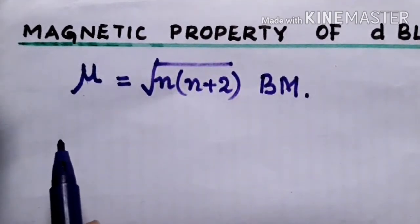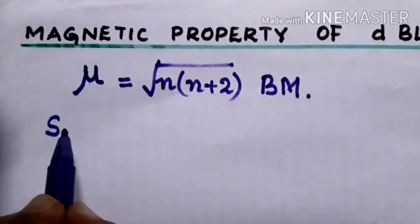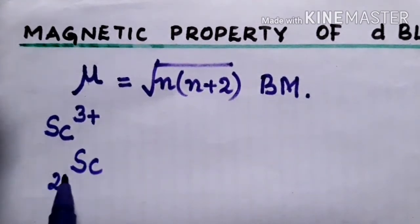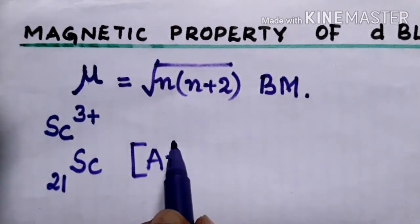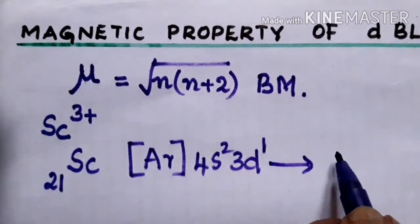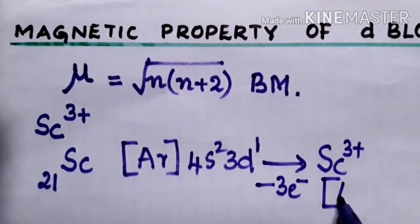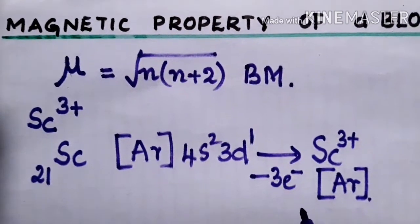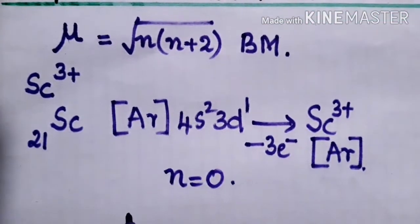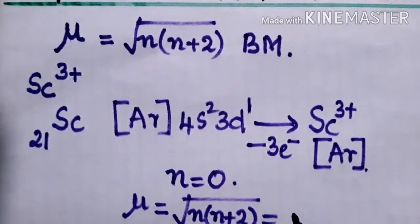We will calculate the magnetic moment for different ions starting from scandium. For Sc³⁺, scandium has atomic number 21, so its configuration is [Ar] 4s² 3d¹. When it becomes Sc³⁺, it loses three electrons, so the configuration becomes [Ar]. There are no unpaired electrons, so n = 0. Therefore, mu = √(0 × 2) = 0 Bohr magneton.